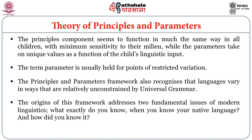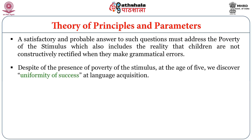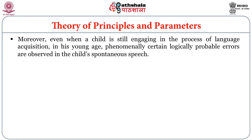The principles and parameters framework also recognizes that languages vary in ways that are relatively unconstrained by universal grammar. This framework addresses two fundamental issues of modern linguistics: first, what exactly do you know when you know your native language; and second, how did you come to know it? A satisfactory answer must address the poverty of the stimulus, which includes the reality that children are not consistently corrected when they make grammatical errors. Despite this, at the age of five we discover uniformity of success at language acquisition. Barring isolation from natural language input or medical abnormality, every child acquires a grammar that nearly corresponds to that of his or her guardians.